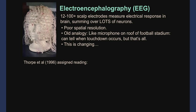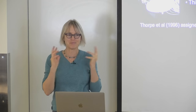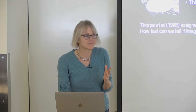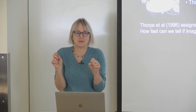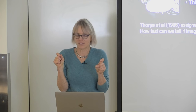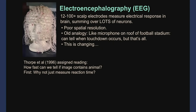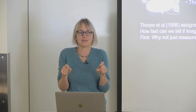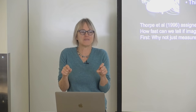I want to briefly mention one of the assigned readings. The point I wanted you to get from the Thorpe reading: he's asking how quickly can we tell if an image contains an animal or not — a way to ask how fast object recognition is. He has people look at images and press a button for animal or no animal. Why not just use those reaction times? Because you perceive it and then you still have to activate motor neurons — figure out which button, which finger, send a signal all the way down to the finger. That includes all the motor stuff along with the perceptual stuff.